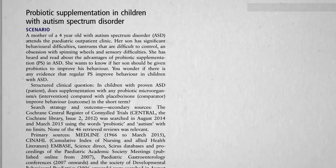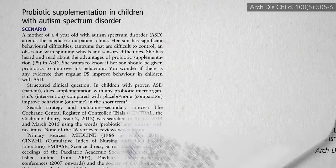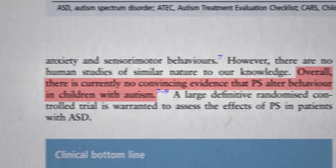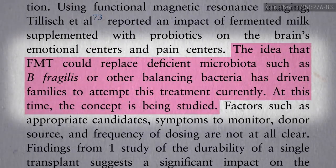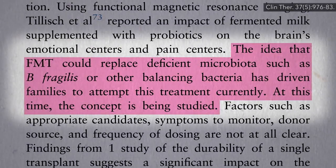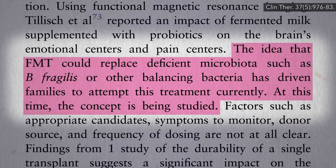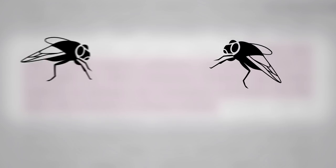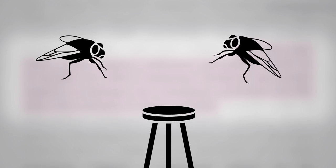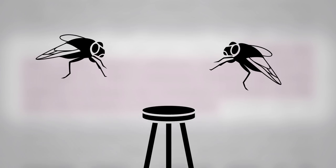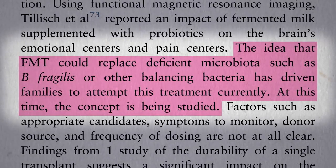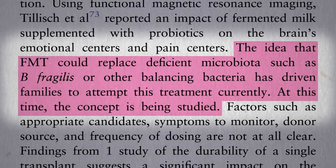They've tried probiotics for children with autism, and so far they don't seem to have helped much. Some families, in desperation, have tried fecal transplants, where they try to beg the neighbor kid to donate. It's like what one fly said to the other: "Is this stool taken?" Not FDA-approved, though, so families are forced to go on the brown market.